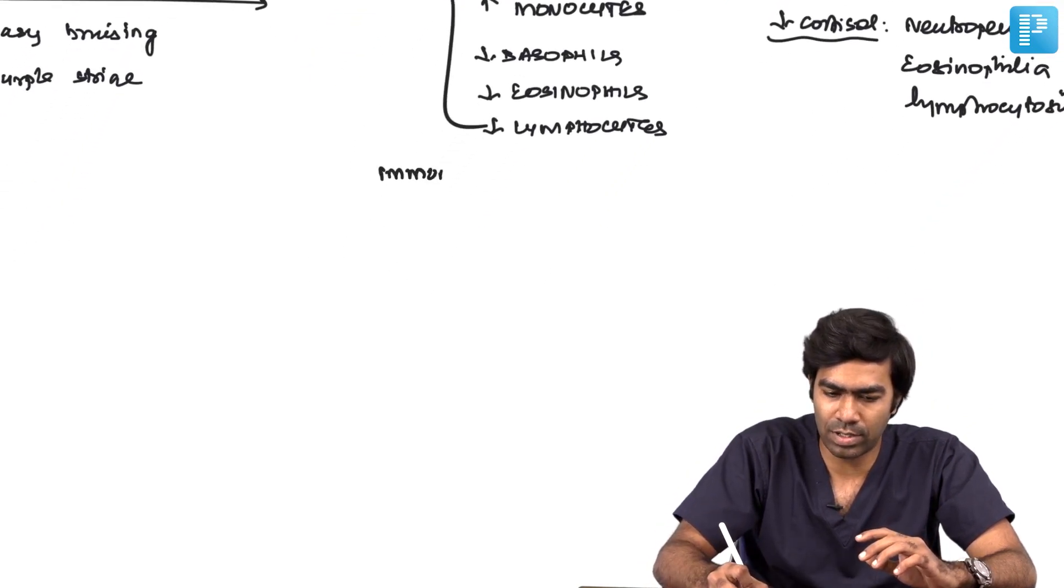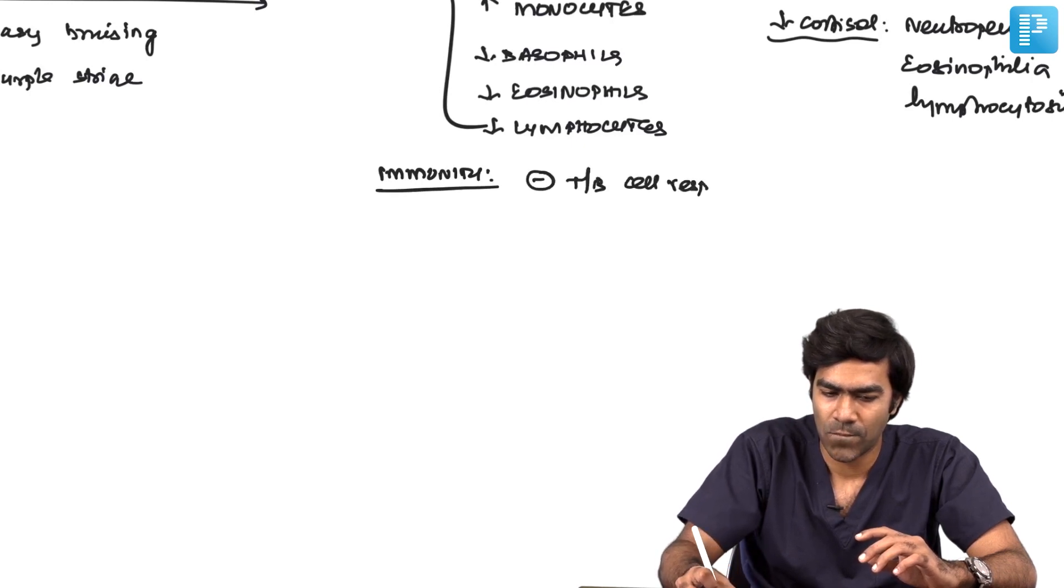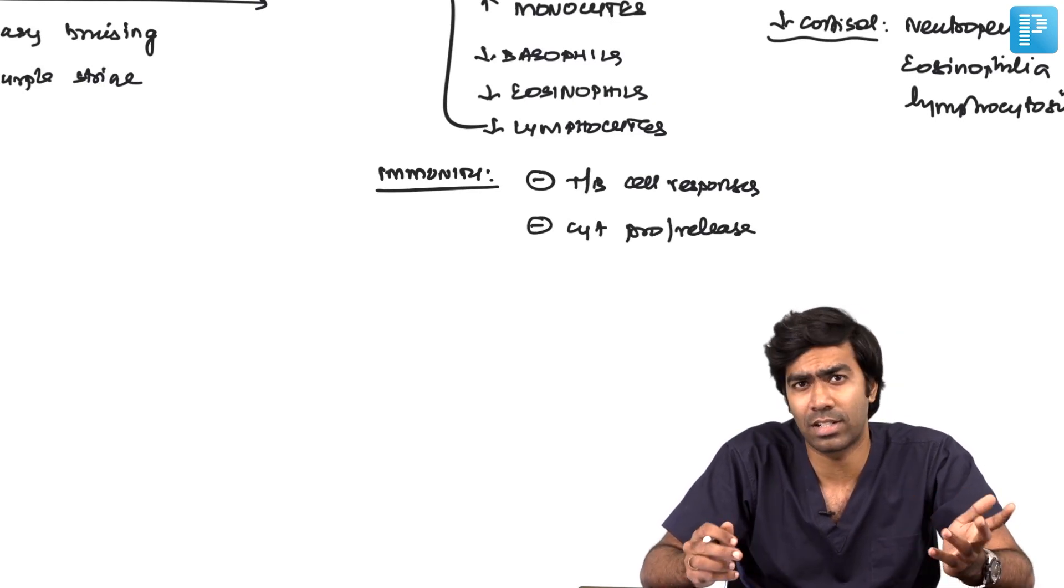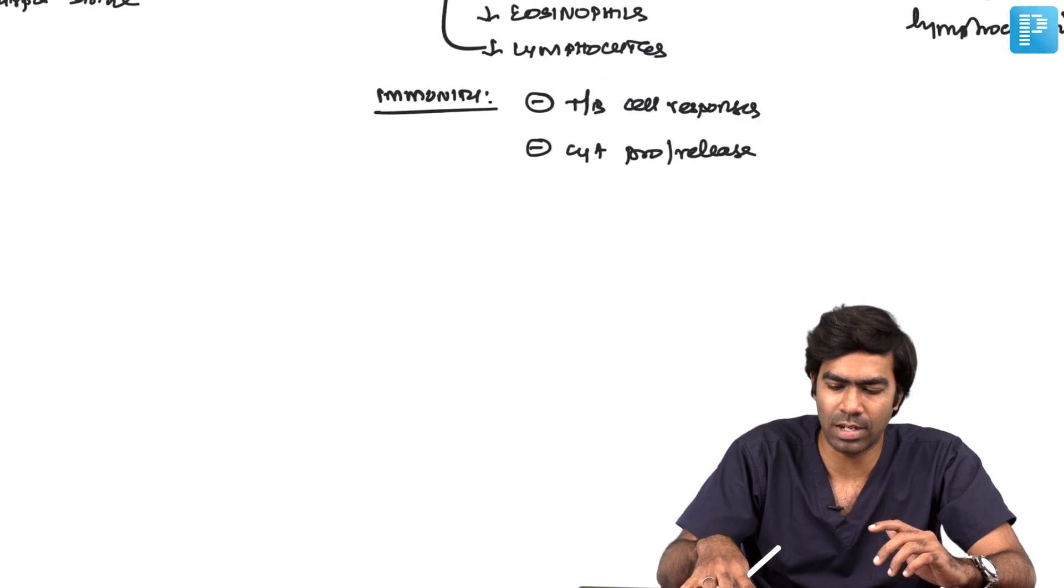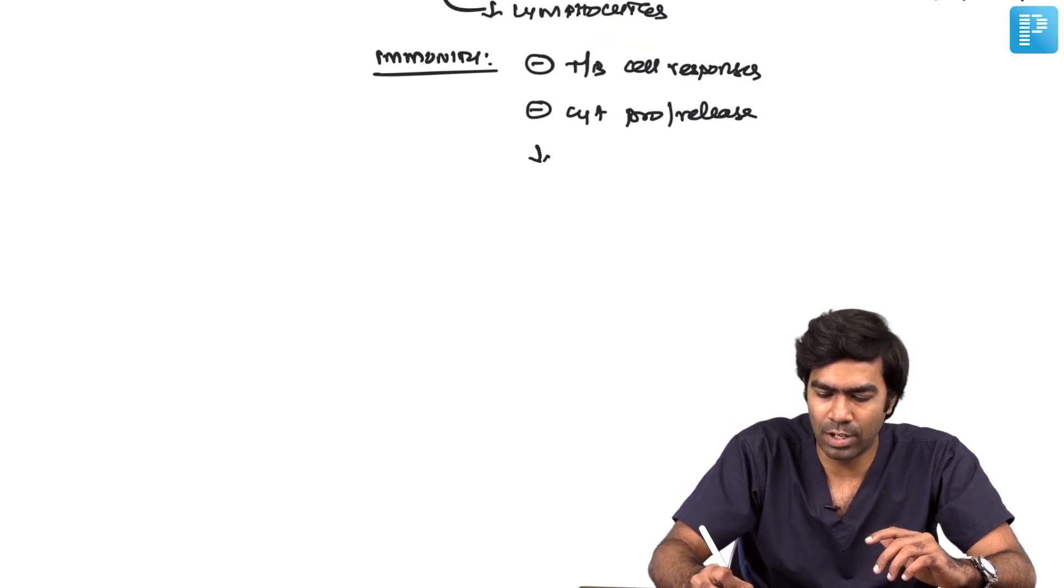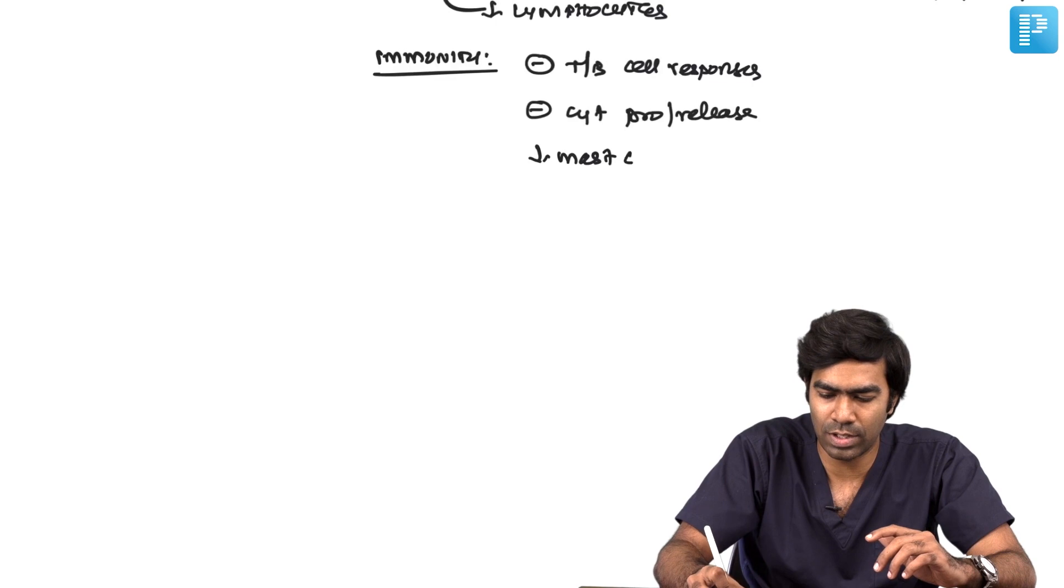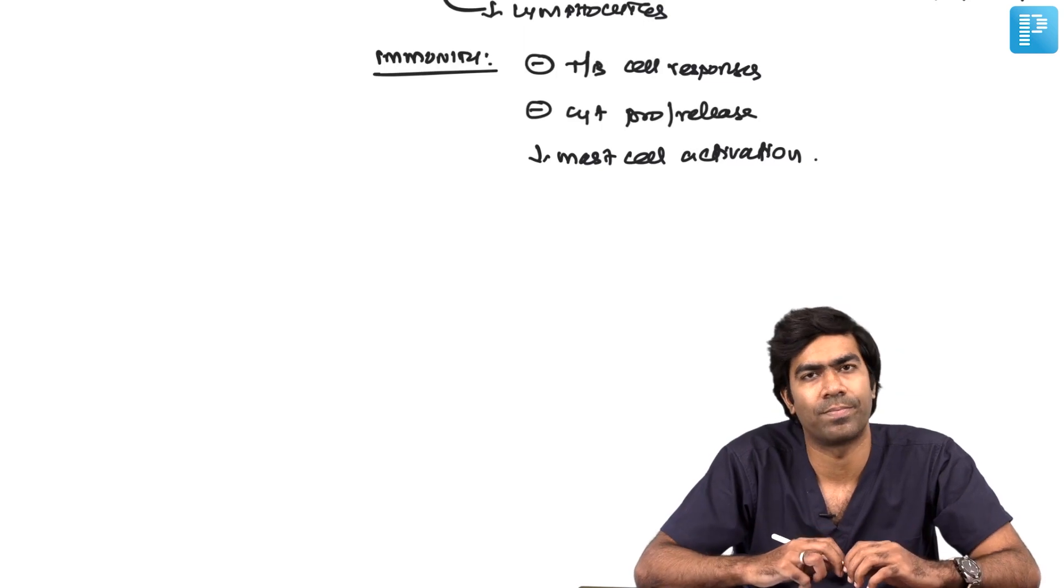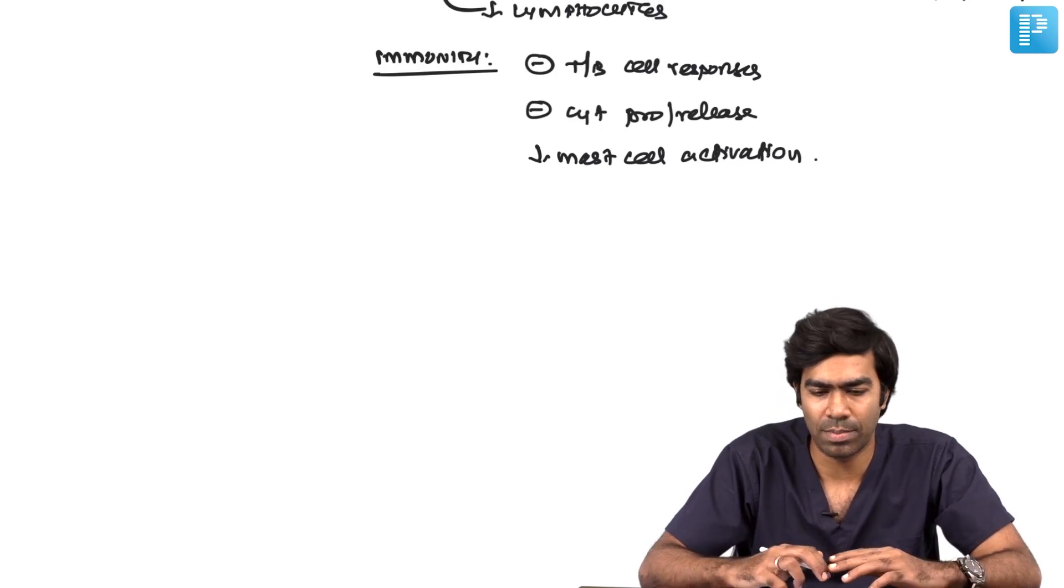Immunity-wise, they suppress immunity because they inhibit both T cell and B cell responses. They can inhibit cytokine production and release, especially acute phase cytokines like IL-1, IL-2, IL-6, and TNF-alpha. They reduce mast cell activation, thereby reducing histamine release, so they can be used in allergic reactions. They are very powerful immunosuppressive agents.